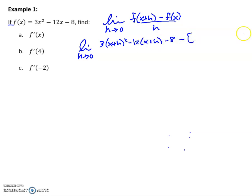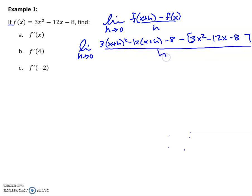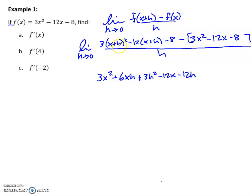I'm going to plug in x plus h for every single x that I see in the original equation, minus — I like to use a bracket here — just f of x, which is just the actual function, and then over h. So I'm going to start multiplying this stuff out and reducing. When I multiply it out, squaring first and then multiplying everybody by 3, I get 3x squared plus 6xh plus 3h squared, and I get minus 12x minus 12h.